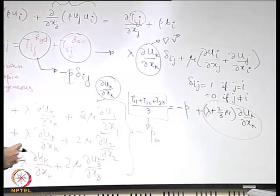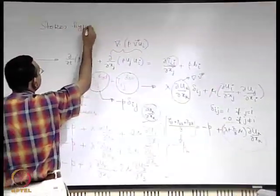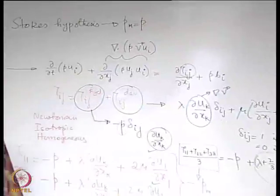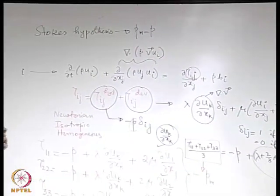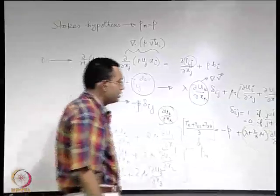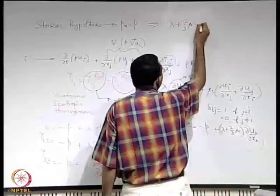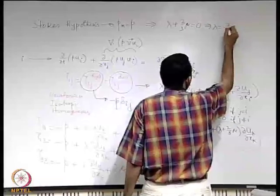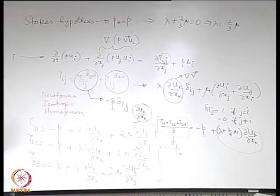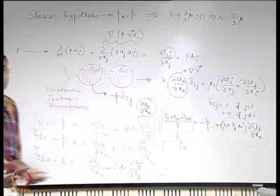To simplify things, Stokes came up with a hypothesis known as Stokes hypothesis: mechanical pressure equals thermodynamic pressure. For a general substance this works only if lambda plus two-thirds mu equals 0, meaning lambda equals minus two-thirds mu. Since this is a hypothesis, there was no proof, but there was an expectation based on which it was postulated.